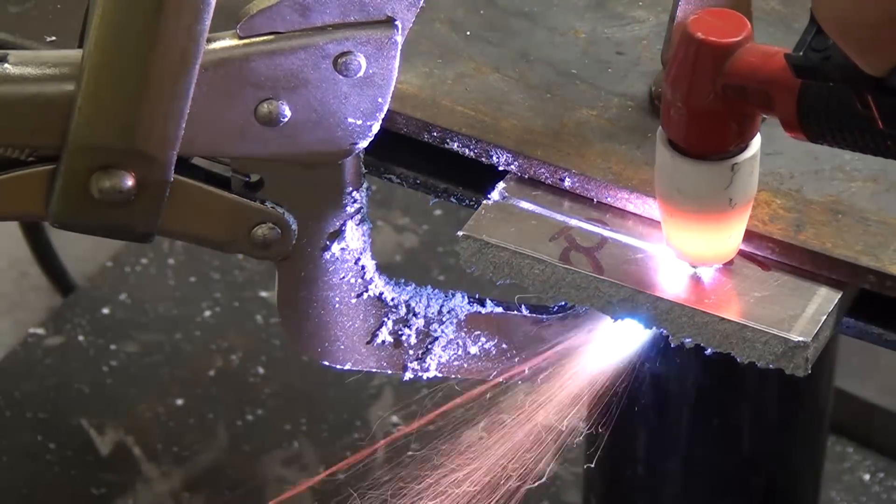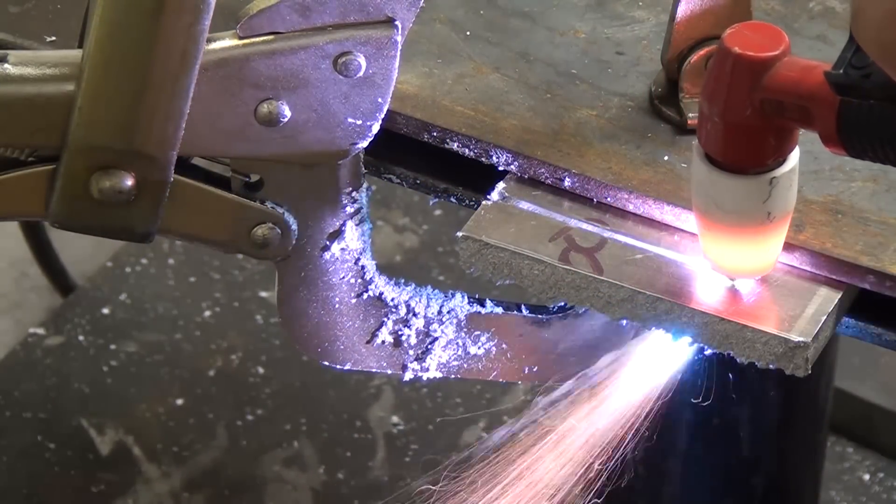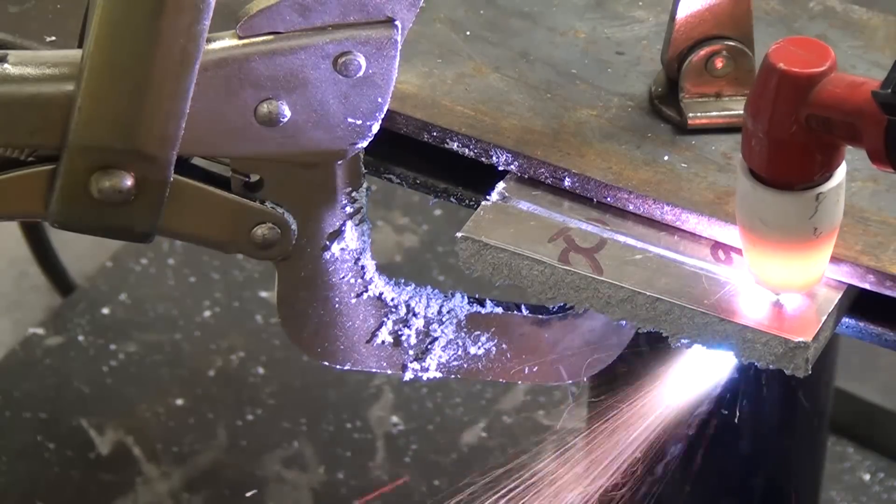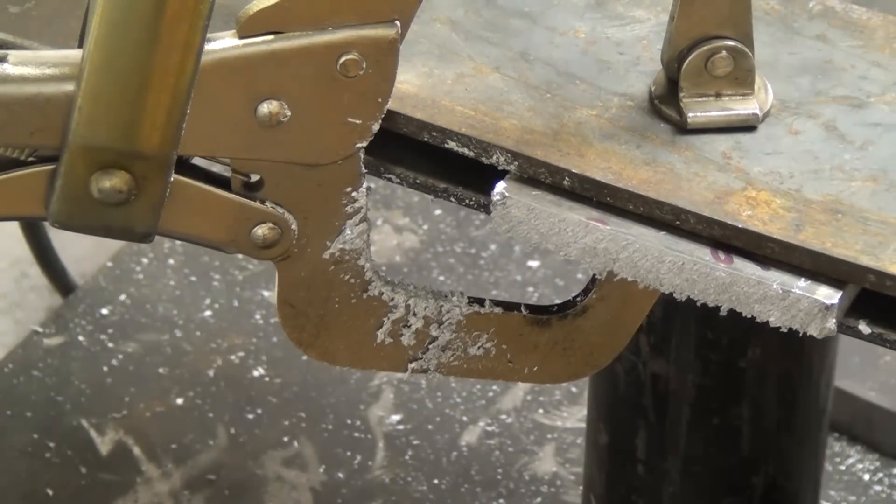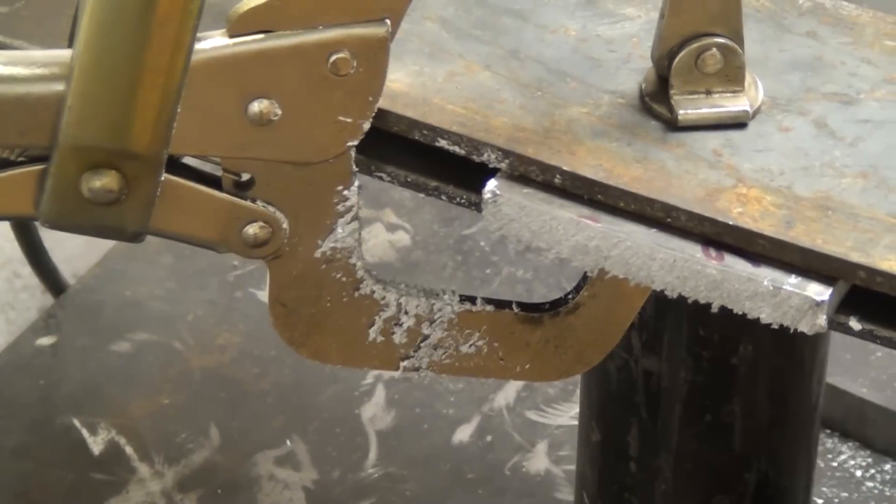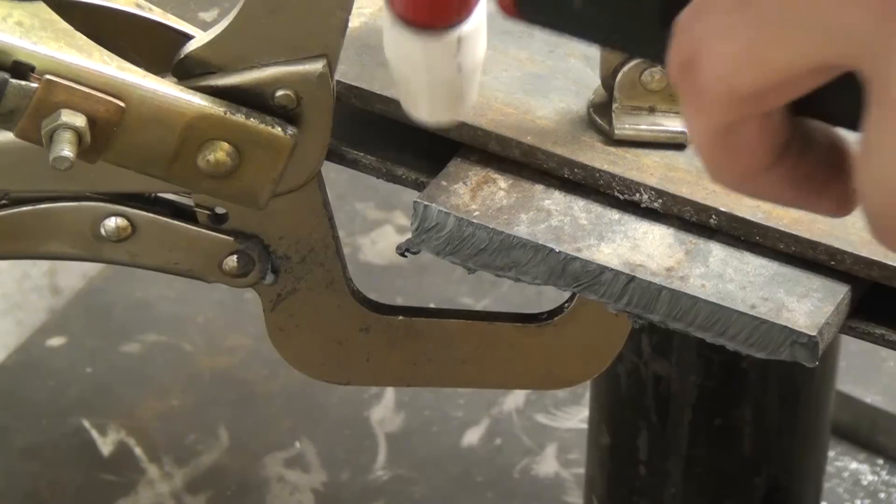This is 3/8 aluminum plate. I usually don't have aluminum in my garage, but I had this piece, so I thought I'd show you that this machine is capable of cutting aluminum, and it looks pretty good, I guess. This is the first time I cut aluminum, actually, was just for this video.